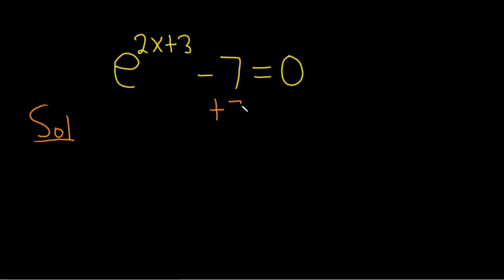So plus 7 plus 7. These cancel, so we have e to the 2x plus 3, and that's equal to 7.